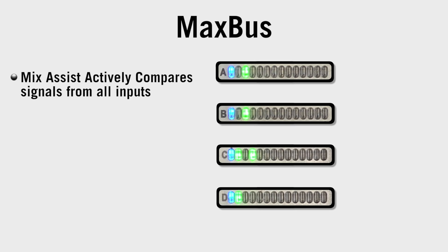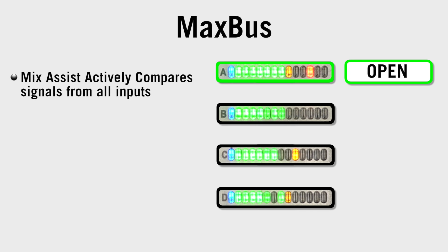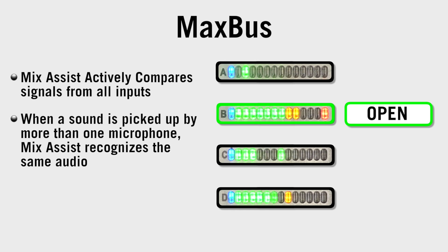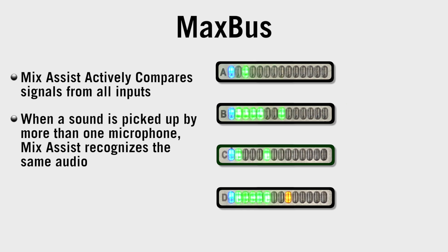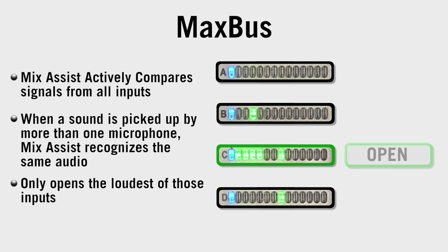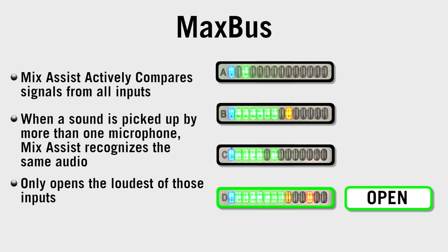The second principle is One Mic Per Sound Source, or MaxBuzz. Mix Assist actively compares signals from all inputs. When a sound is picked up by more than one microphone, Mix Assist recognizes the same audio at multiple inputs and only opens the loudest of those inputs.